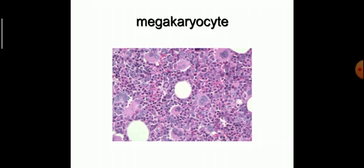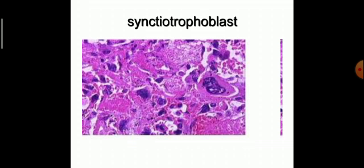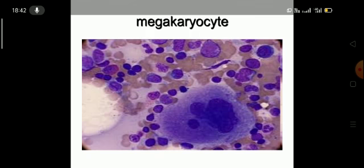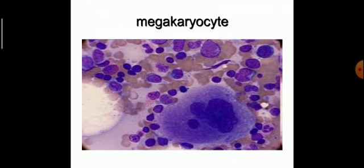The megakaryocyte is a precursor of platelets and is a physiological giant cell found in bone marrow. The trophoblast is also a physiological giant cell found in the placenta. This is a microscopic picture of a megakaryocyte.